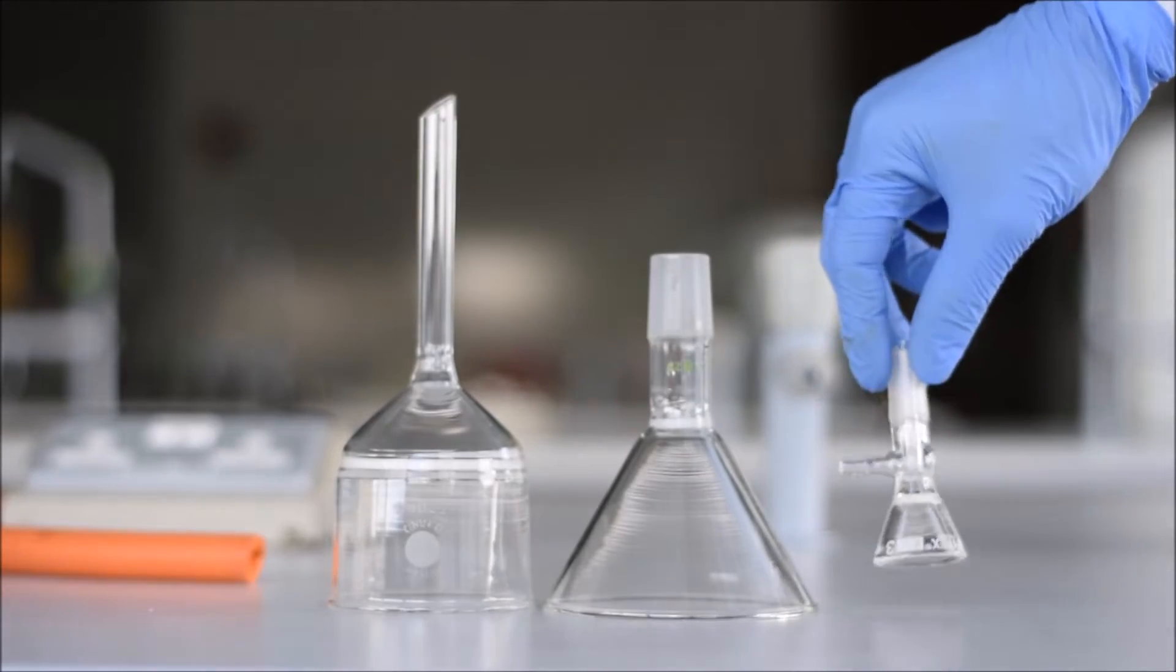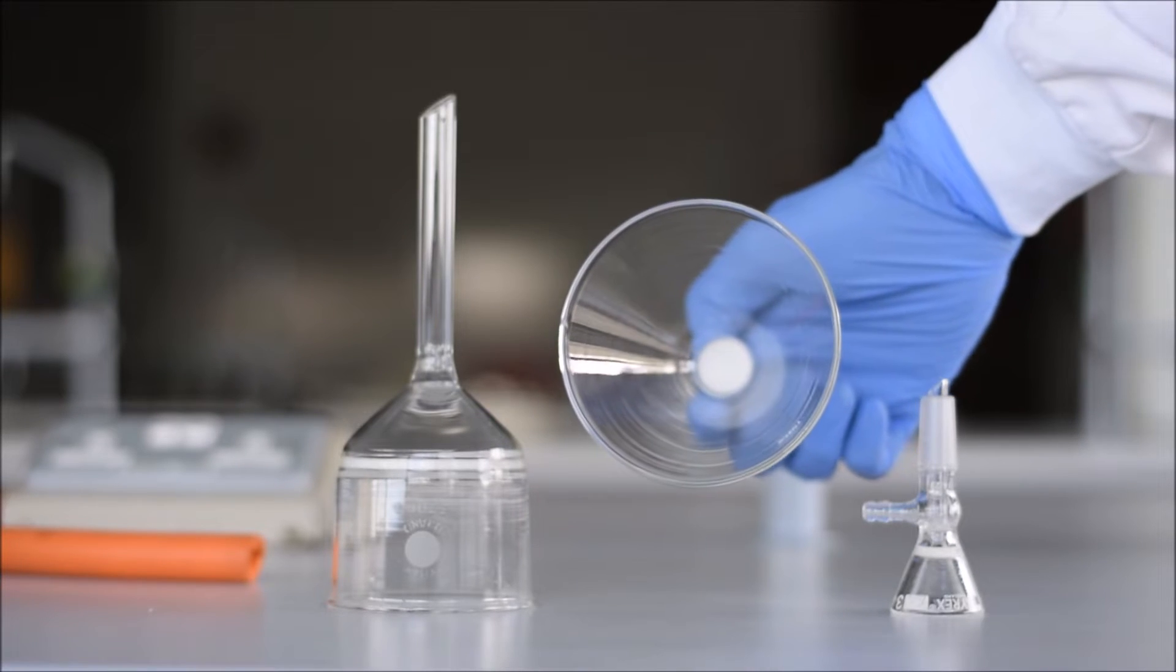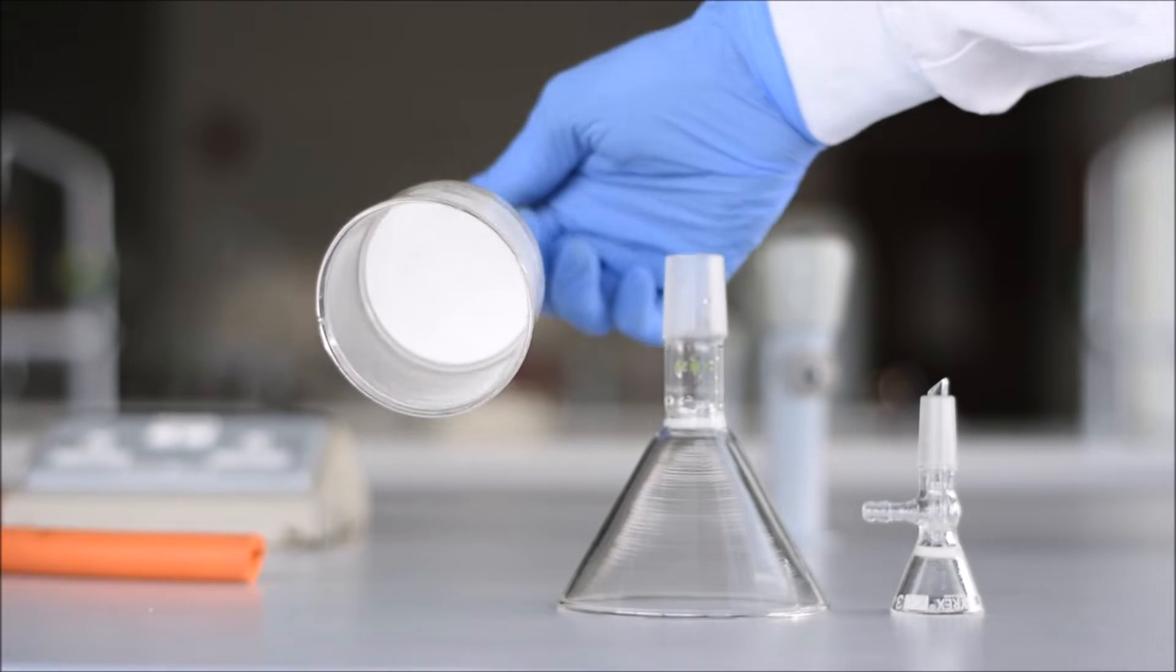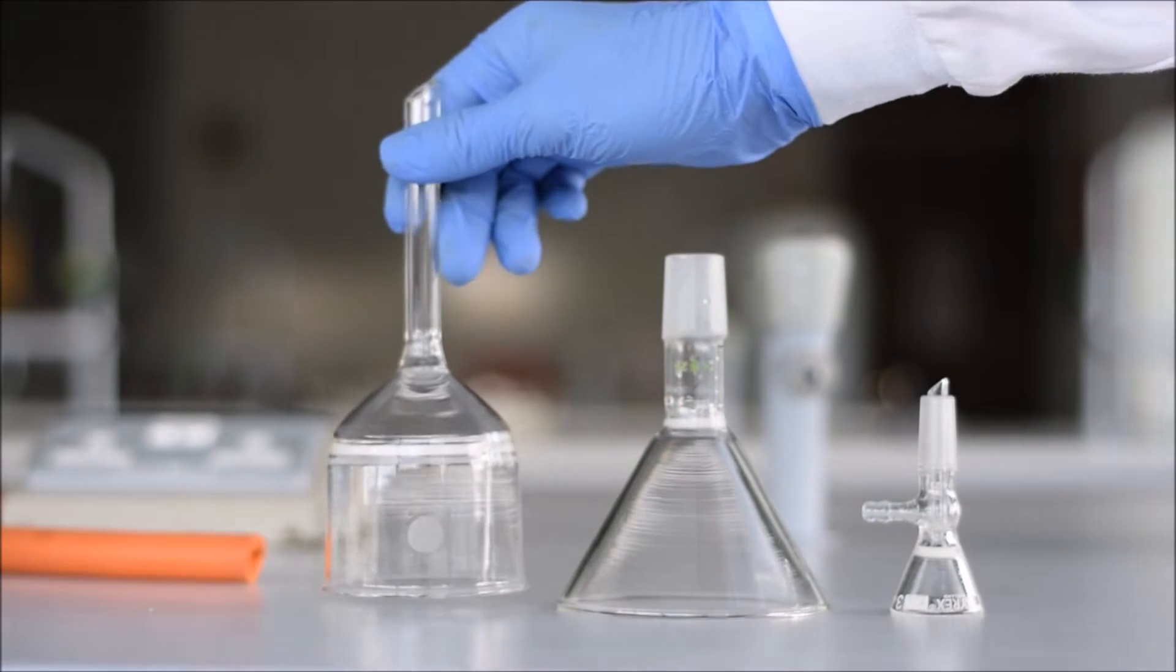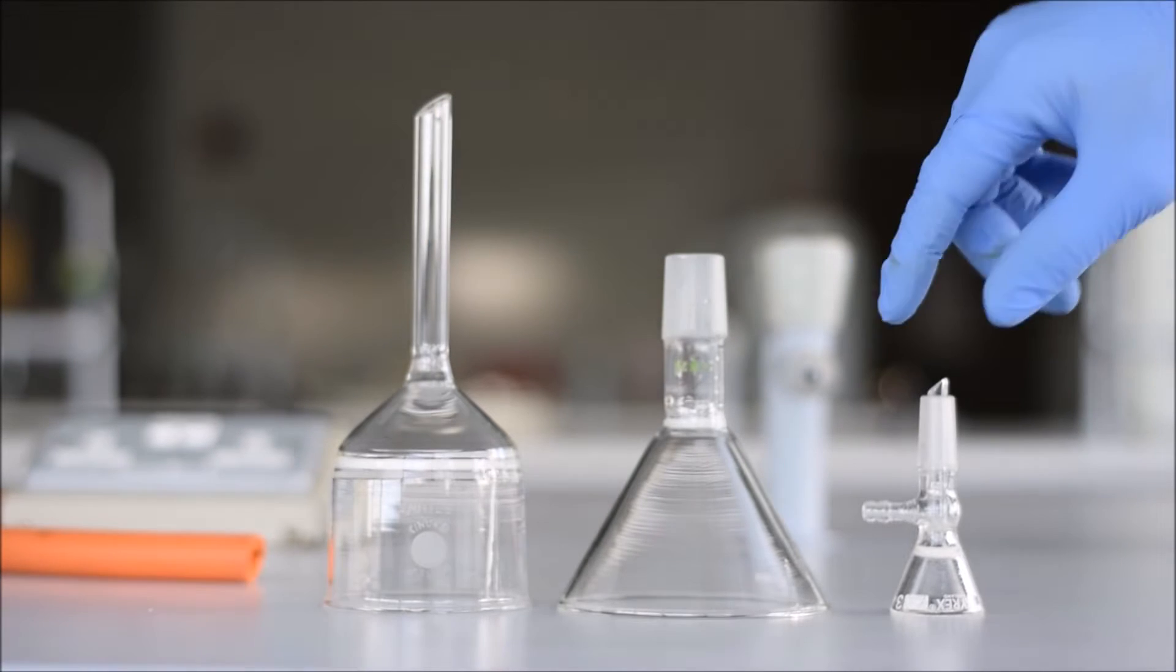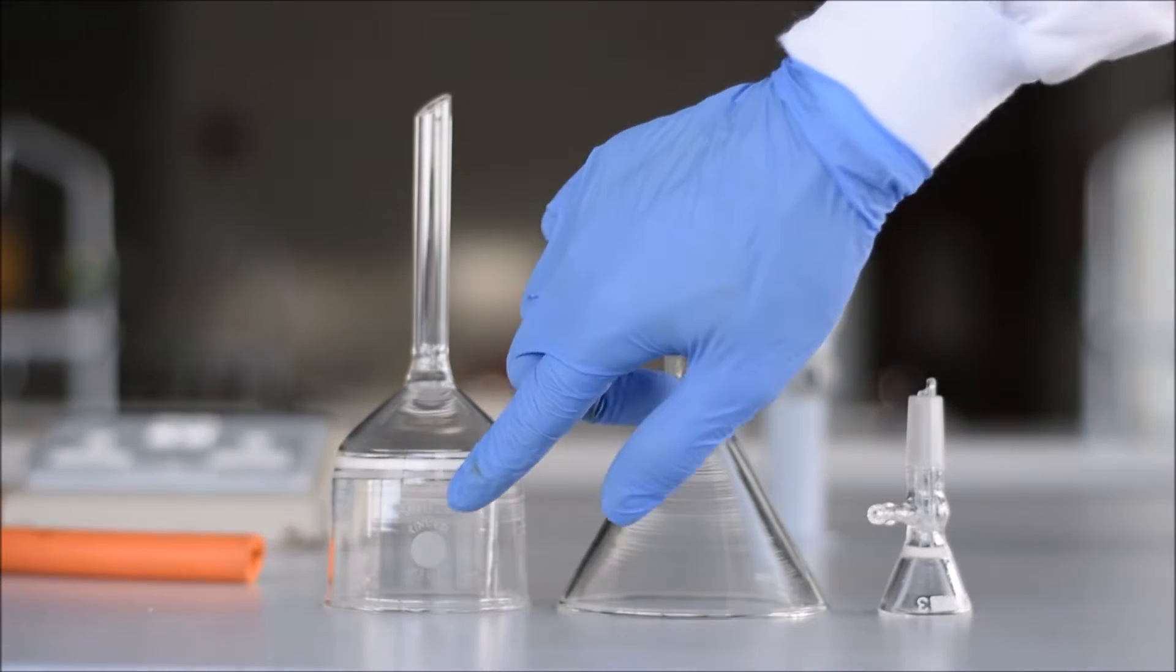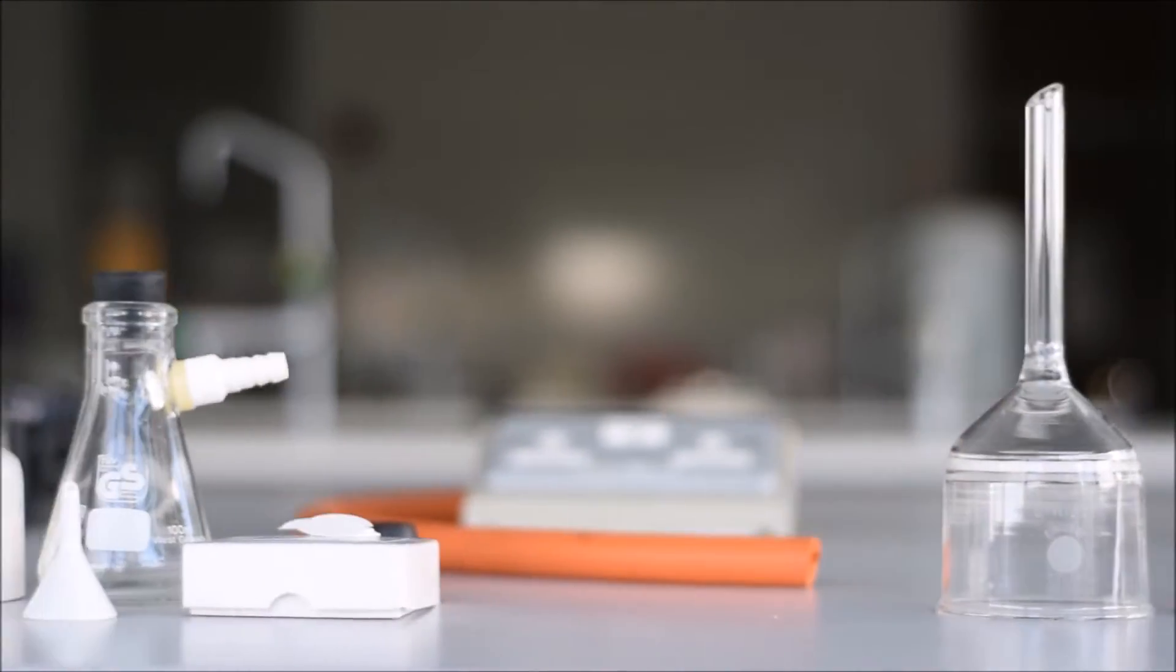Another choice available is a fritted funnel. A fritted funnel has a layer of sintered glass across the entrance to the funnel which filters out the material, and that fritted glass is made of tiny particles of glass melted so they stick together but don't form a solid layer. They can come with various different porosities or fineness of filter and they're really quite useful. We'll come back to them again too.